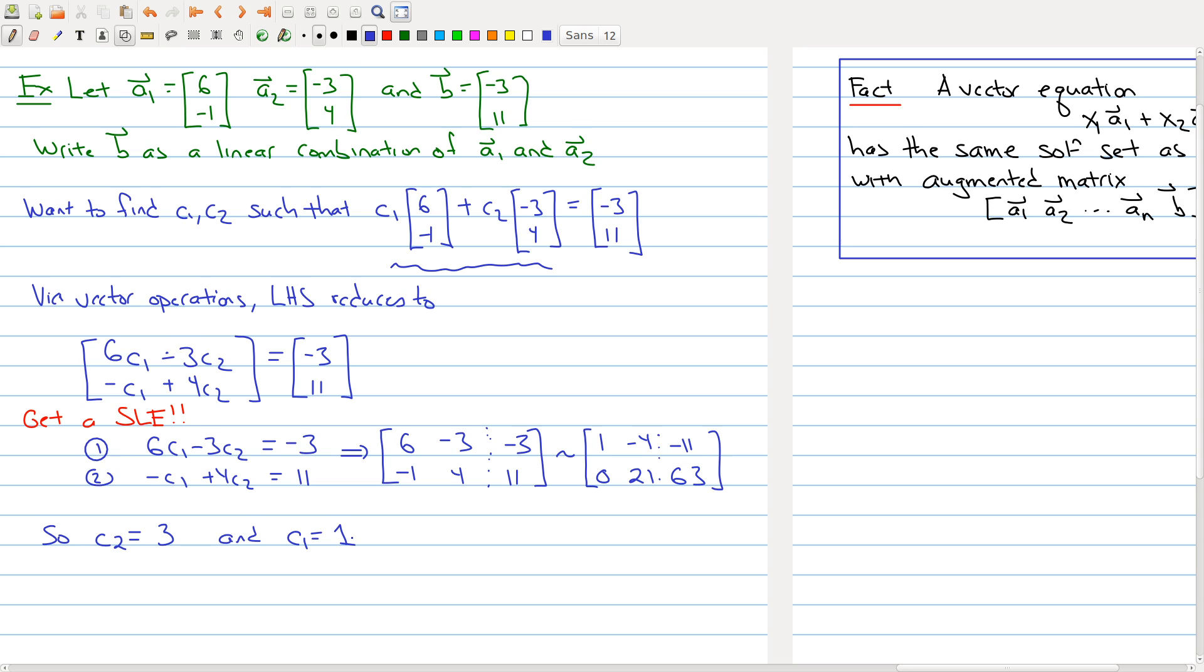Okay so we do actually have that b is a linear combination. All right so let's write that out so it's in your notes: 1 times the vector [6, -1] plus 3 times the second vector [3, 4] is equal to the vector [-3, 11].